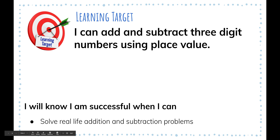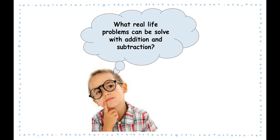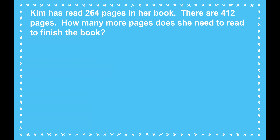Your learning target is: I can add and subtract three-digit numbers using place value. Your success criteria is: I will know I am successful when I can solve real-life addition and subtraction problems. What real-life problems can be solved with addition and subtraction? Be thinking about that as you listen to the lesson and complete your assignment today.